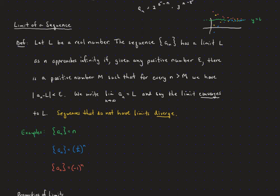As we go further out, the terms get closer and closer to L. If a sequence does not converge, then it diverges — it's an either-or categorization. Looking at the green sequence — 1, 2, 3, 4 and on — as we go further out, it's not getting closer to a single number. So we say the sequence diverges.